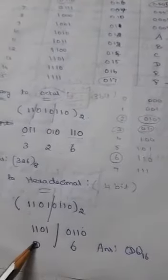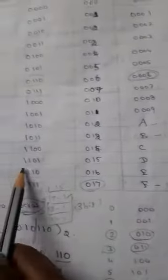So we have to return 6 and then what is 1, 1, 0, 1? For 1, 1, 0, 1 what is the value? D. So we have to given D. So what is the answer? D6 base 16.